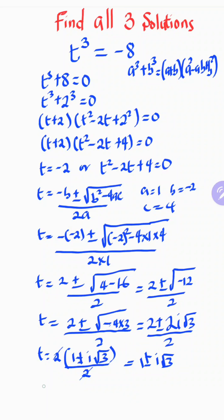So to summarize, the three solutions are: t equals negative two, and t equals one plus or minus i root three. Those are the three solutions to this problem. Thank you very much for watching — see you next time.